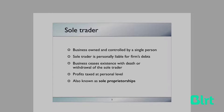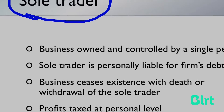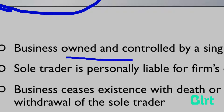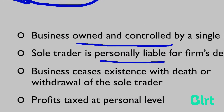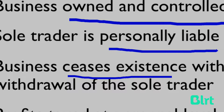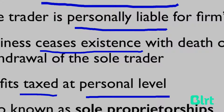Now let's look at the types of businesses you can set up. The first is a sole trader. Let's look at Anna, who is a small business owner running her own hair salon. Anna owns and controls the entire business. She is also personally liable — if the firm goes bankrupt, she'll have to pay those debts with her own money and assets. And if she were to pass away, more often than not the business will cease to exist and close down.